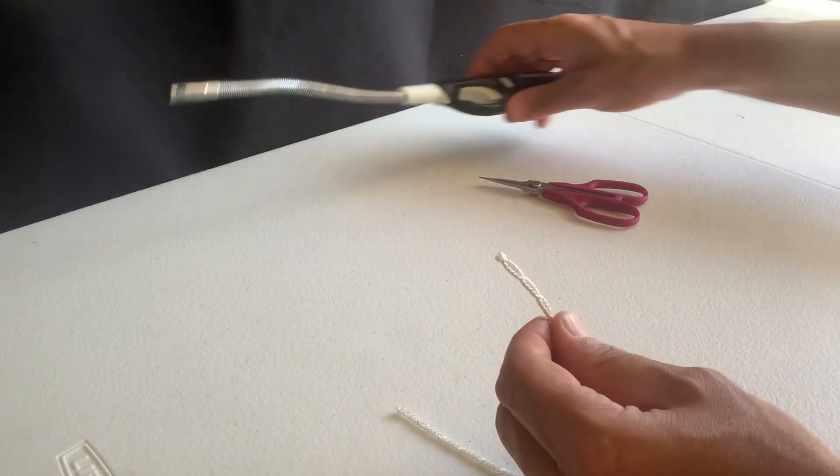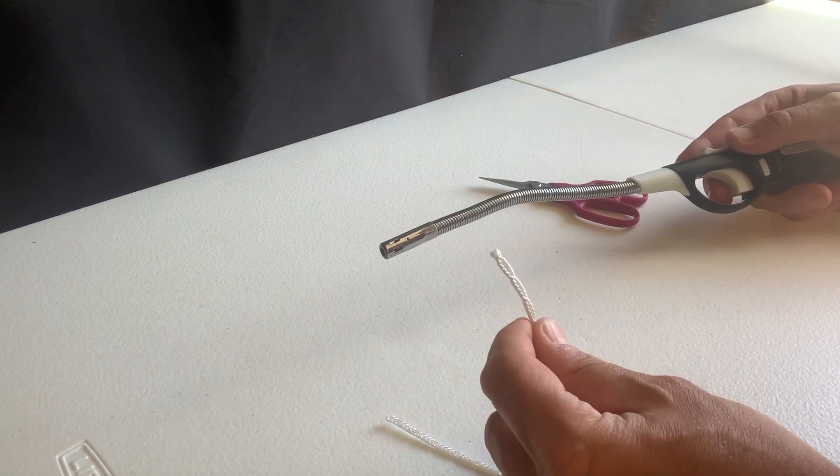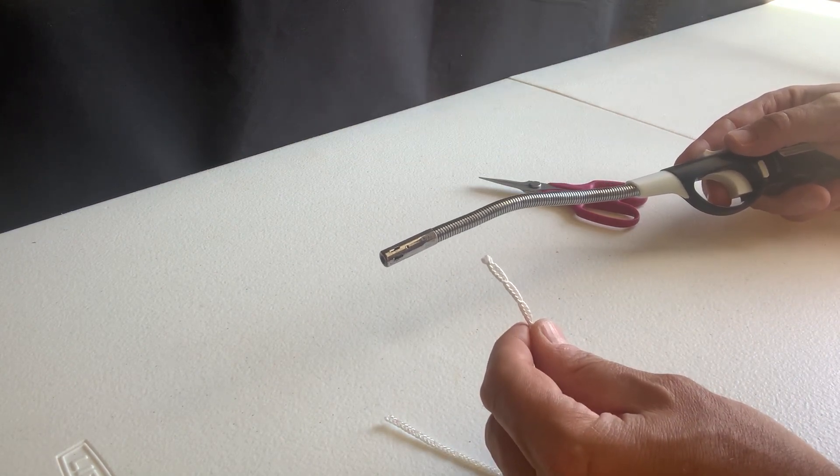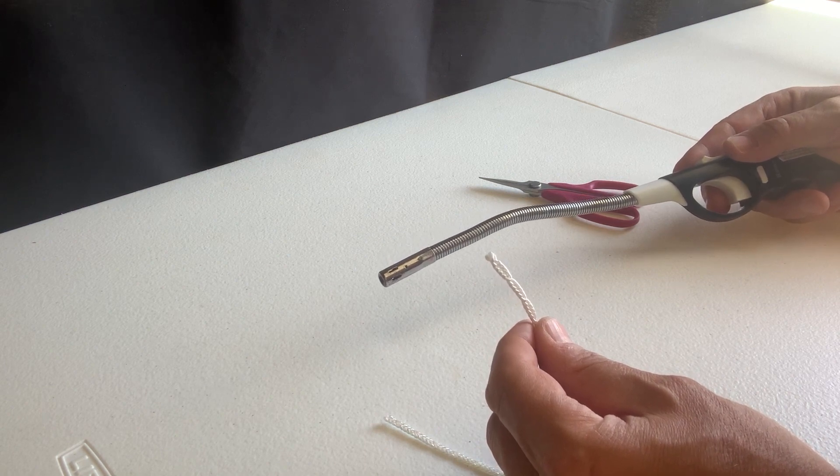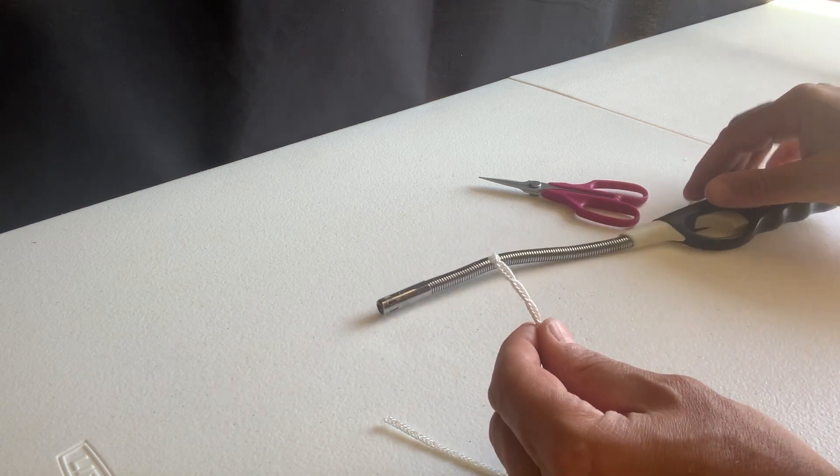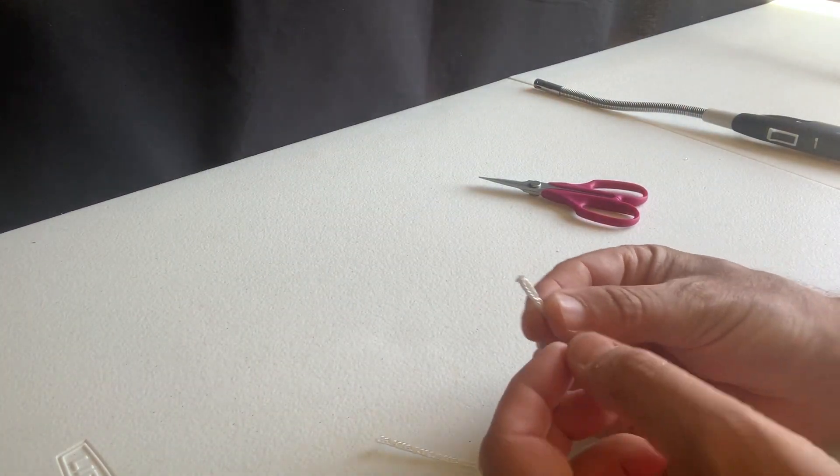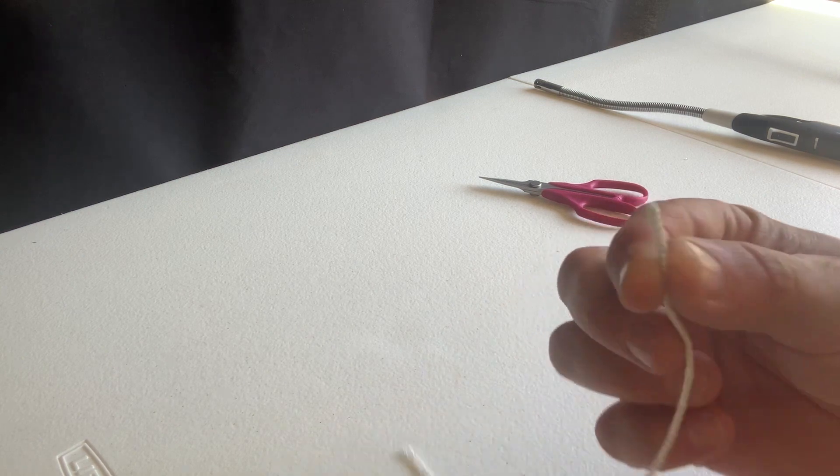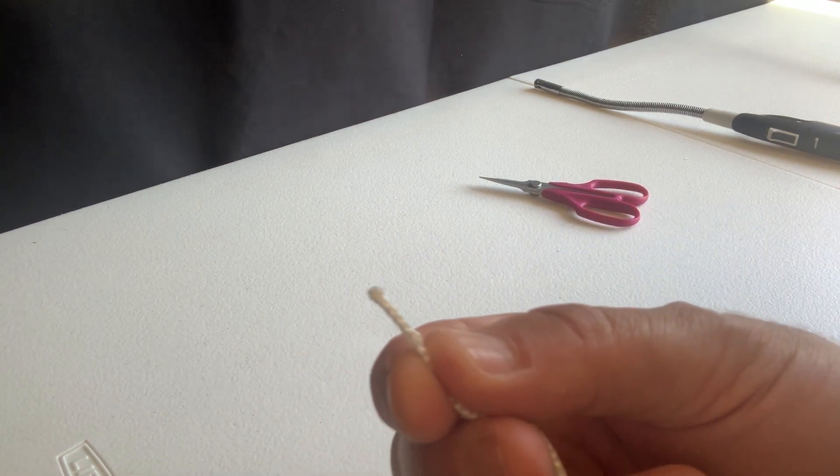I've got a lighter here, a barbecue lighter, something like that, a match will work, but you need to singe the end. Here I've now singed the end and it's a harder plastic now and it won't come undone.